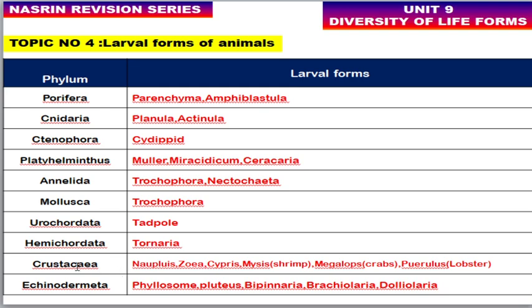With respect to Crustacea: nauplius, cypris, and shrimp larvae are called mysis; crabs have a megalops larval stage. Lobster larval form is called phyllosoma. For Echinodermata, larval forms include pilidium, pluteus, bipinnaria, brachiolaria, and doliolaria.